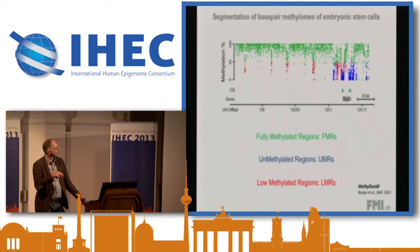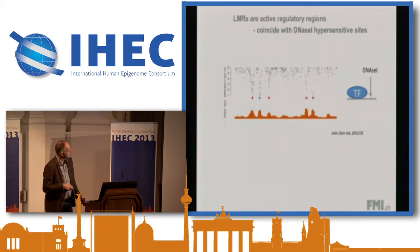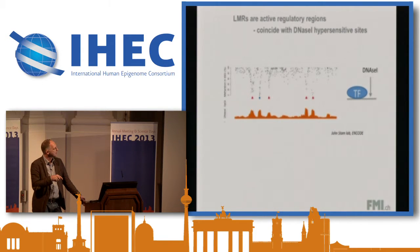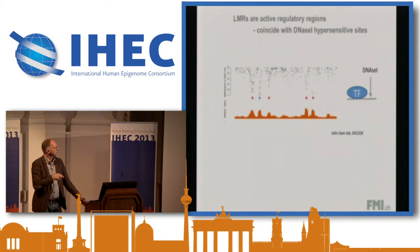We're using segmentation tools to segment the genome into what we call unmethylated regions — mostly no methylation — fully methylated, and what we termed low methylated regions (LMRs), which mostly covers these dips in methylation. To make a long story short, it turns out that these regions are basically regulatory regions, sites that are occupied by transcription factors. Comparing to a DNase-1 dataset from John Stamatoyannopoulos' lab, wherever we see these dips in methylation we see a peak in DNase-1. We have many other evidences that it's regulatory regions occupied by transcription factors that show reduced methylation.